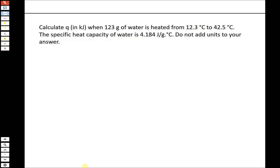This next problem deals with calculating heat using specific heat capacity. We learned an equation for Q in this course: Q equals MCΔt. A lot of students call it MCAT — I don't love that because delta is not the letter A — but if it helps you remember it, go for it. For most of these problems it's just plugging in numbers, occasionally dealing with units.